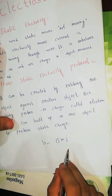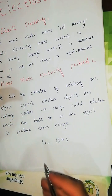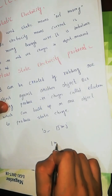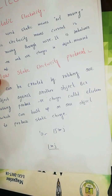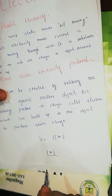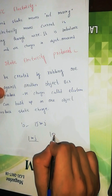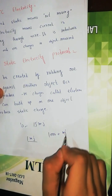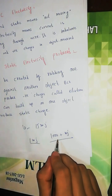The energy produced by tapping is around 1 millijoule, which is what we need to feel a shock. However, if 1000 millijoules of energy is produced, it can kill us.